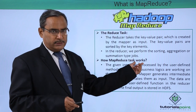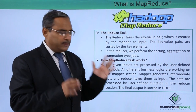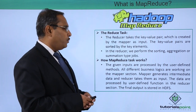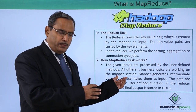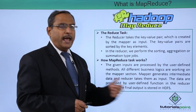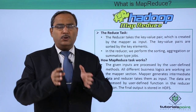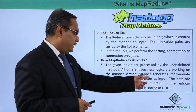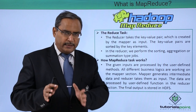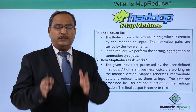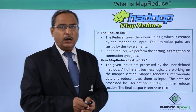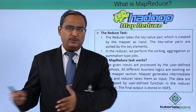Now let us go for the macro view of how the MapReduce task works. The given inputs are processed by user-defined methods. All different business logics are working on the mapper section. The mapper generates intermediate data and the reducer takes them as input — the output of the mapper is the input to the respective reducer. The data is processed by the user-defined function in the reducer section, depending on the business logic, and the final output is stored in HDFS — the Hadoop Distributed File System.